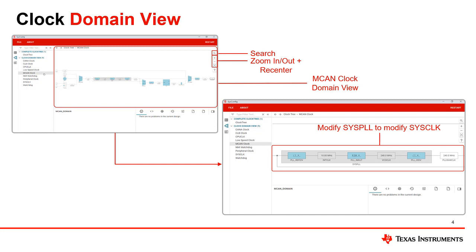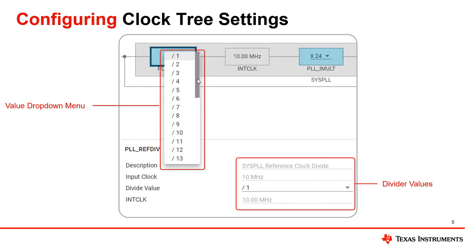We can use the search or zoom in and out buttons to search for this syspll section. Let's change the syspll reference clock divide to divide by 5. In the drop-down menu, we can change the divider to our desired value and see its effect instantly.